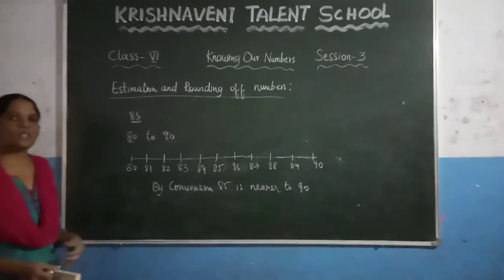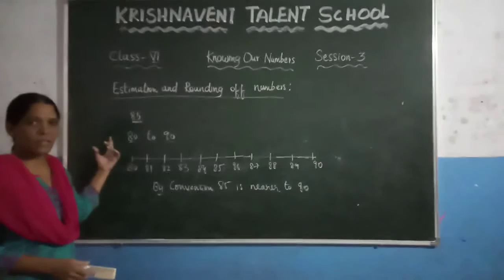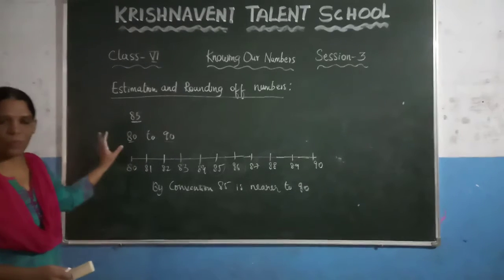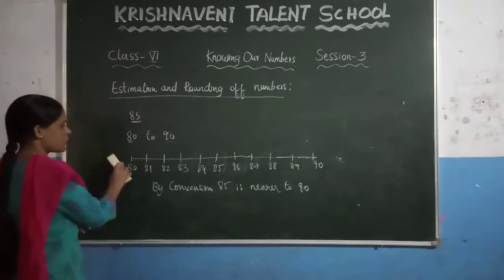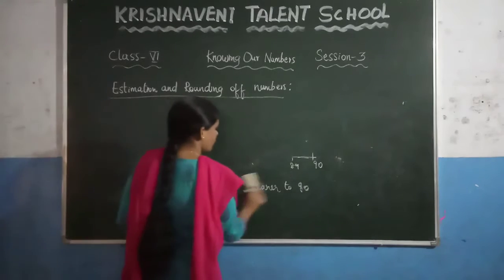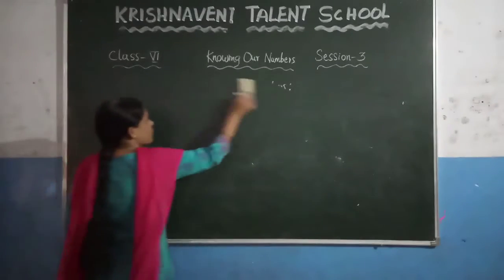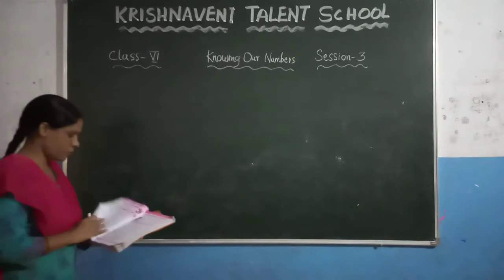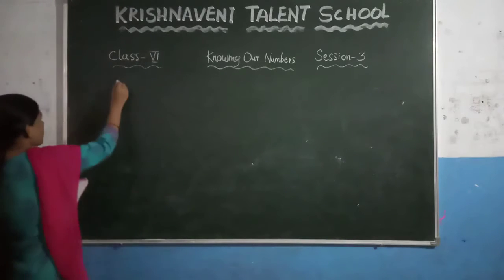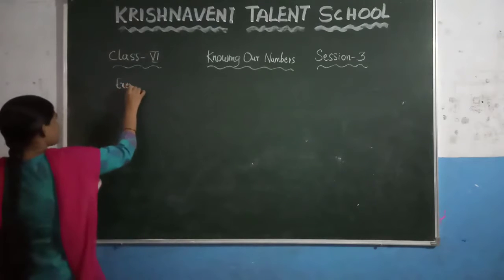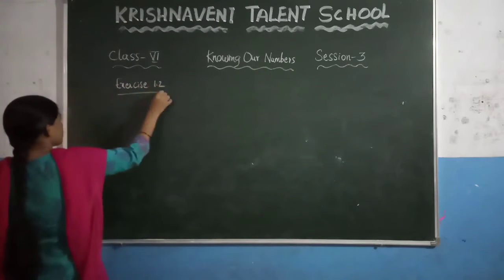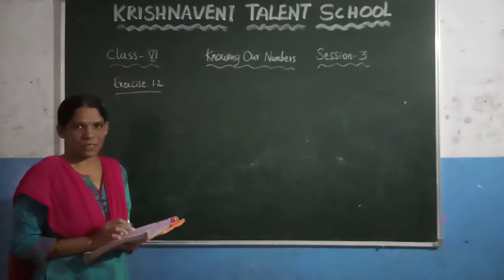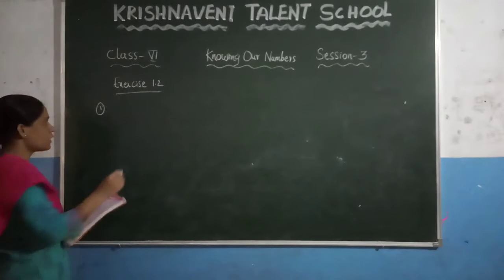If you have given a number, just you have to check that number lies between which numbers, so that you can say that number is nearer to which number. Now, based on this concept, let us solve the next exercise. The first question: round off the following numbers to the nearest tens.